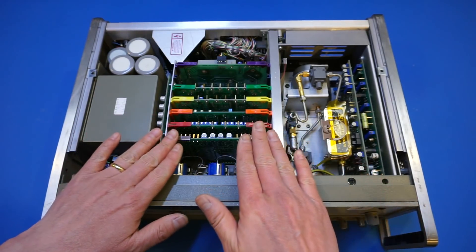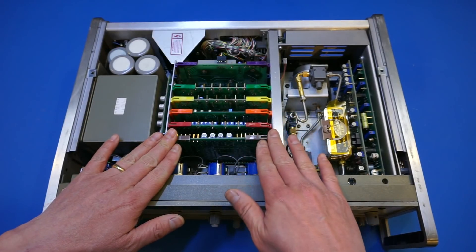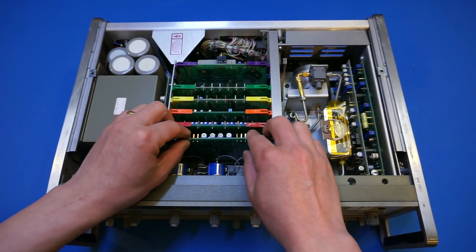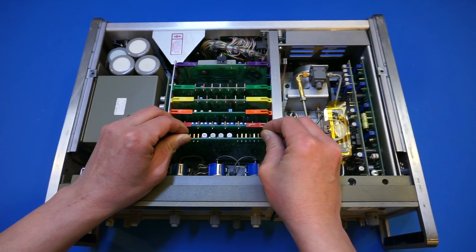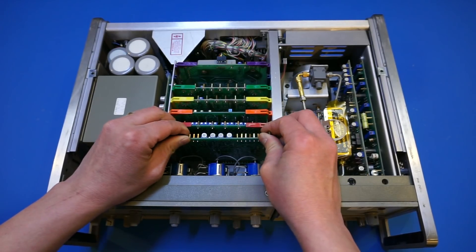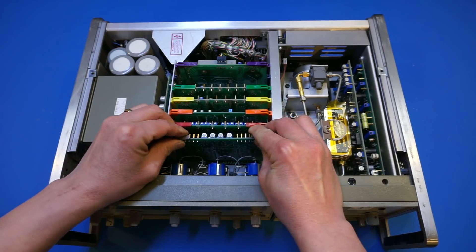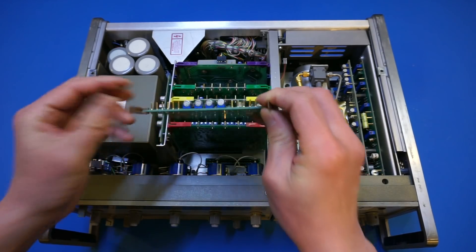Now, so we have, as I mentioned earlier, six boards here. And the first board, I think, is a sweep generator board. So let's take this out and take a quick look. And if I can take it out. Okay, it's a little bit tight.